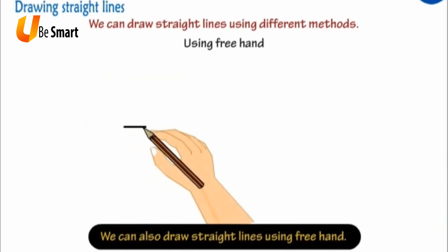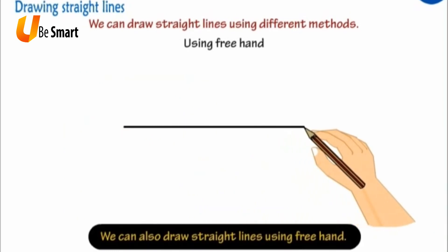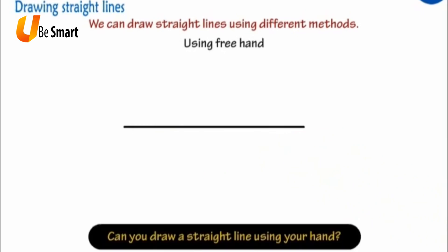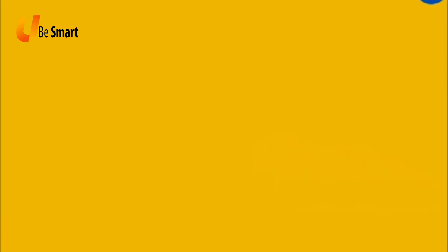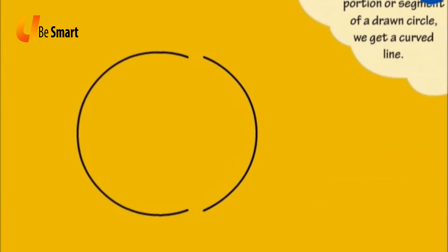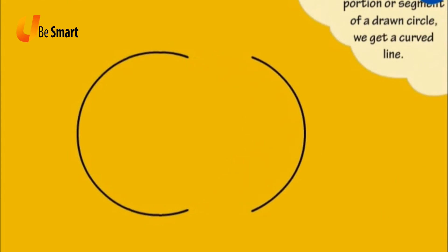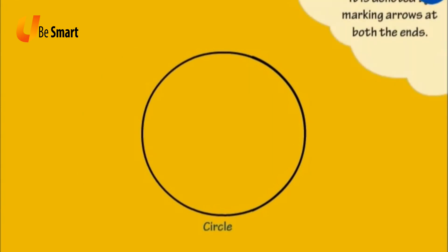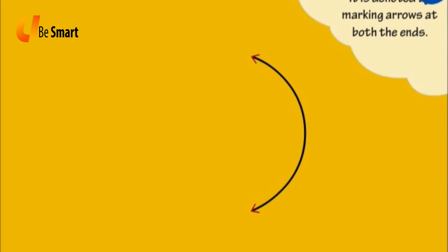Using free hand: We can also draw straight lines using free hand. Can you draw a straight line using your hand? Curved lines: If we cut a little portion or segment of a drawn circle, we get a curved line. This line can be extended from both the ends to form a circle, denoted by marking arrows at both the ends.